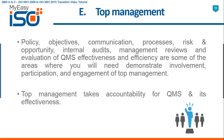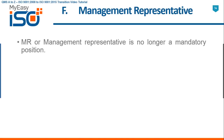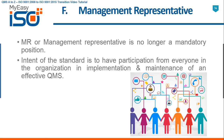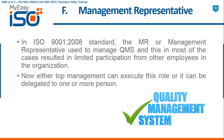In ISO 9001 2008 standard, the MR or management representative was used to manage the QMS, and this in most cases resulted in limited participation from other employees in the organization. ISO 9001 2015 removes this position with an anticipation of all employees being involved in design, execution, and improvement of an effective QMS. Organizations can still retain the earlier position of MR if they wish, but now you have to ensure top management takes this responsibility and delegates to someone, and you involve the rest of the employees as well.